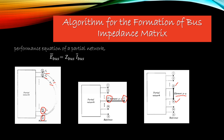I_bus is a vector having I1, I2, and so on up to Im bus currents — the set of all bus currents. The size of Z_bus is M by M, since there are M buses in this partial network. These are the details about partial network, addition of branch, and addition of link.